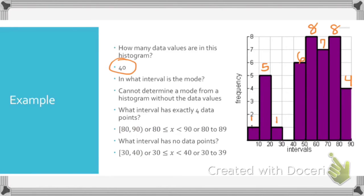The next question, in what interval is the mode? Well, you can't determine the mode, because remember, mode is the number that occurs the most, but each one of these are representing intervals, so we don't necessarily know how many, let's say, 45s fall in between 40 and 50. We don't know how many, there could be three of them, there could be one, so it's hard to determine.